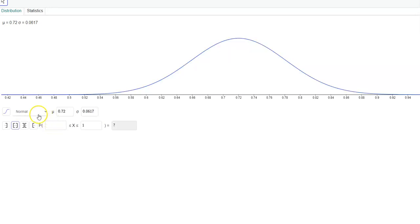The first one said find the probability that it's between these two values. So we'd want to use this button right here for the interval in between. That would be 0.65 up to 0.75, and that's how we get 55.83 percent.